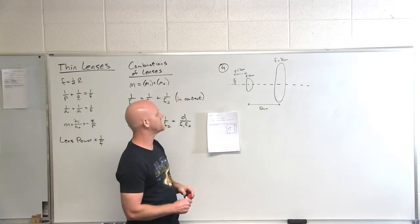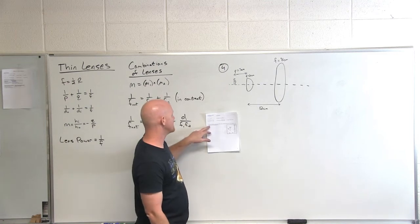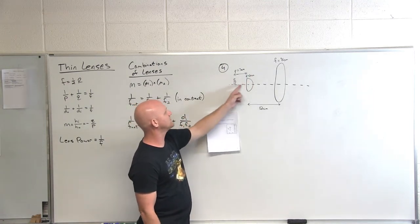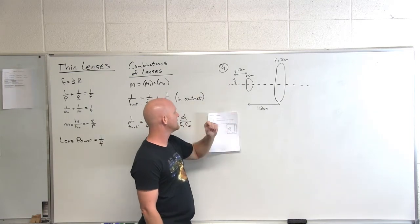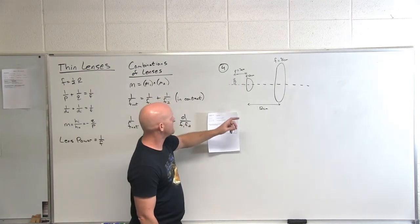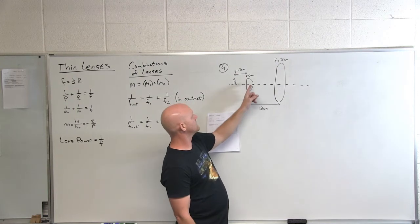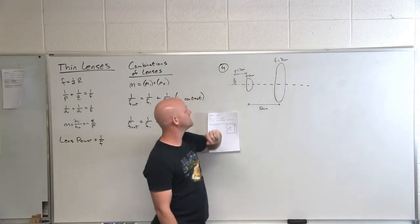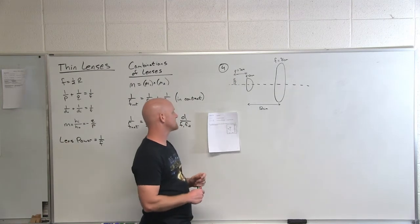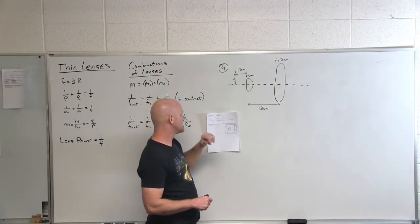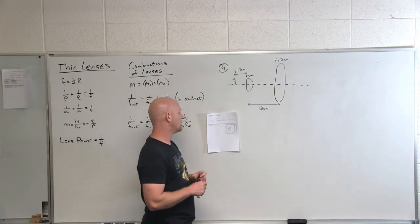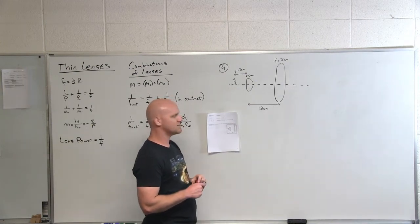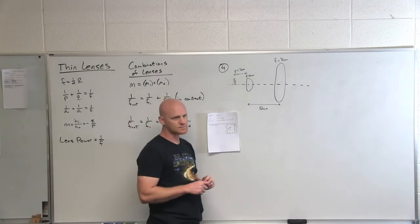So let's kind of take a look at the overall net result here in question number four. I just recreated the picture here. We've got an object that's three centimeters from this first lens, and then we've got 12 centimeters and there's another lens. We've got two different focal distances here in this case for both lenses. The question is for this combination of lenses, what would be the image distance for the eyepiece and what would be the overall magnification?